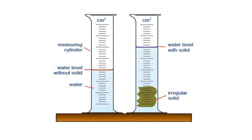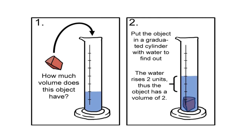For example, using a graduated cylinder, you can get the volume of an irregular solid. First, measure the water level without the solid inside. After you put the irregular solid inside, check the new water level with the solid. You can observe a rise in the water level, and you can get the volume of the irregular solid in cubic centimeters. If the water rises two units after placing the object, then the object has a volume of two.